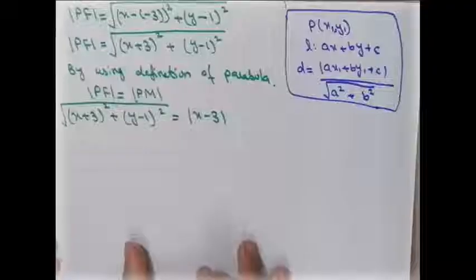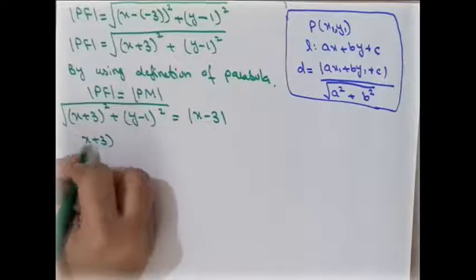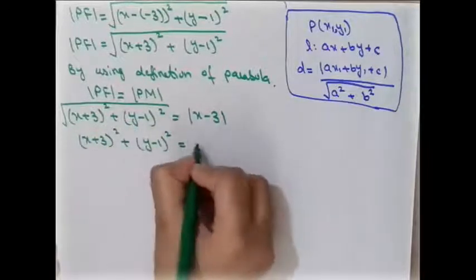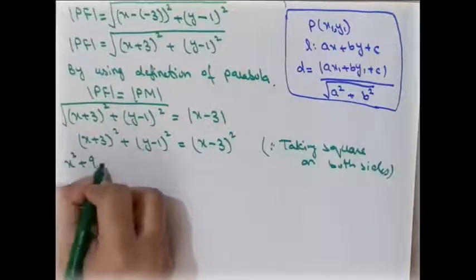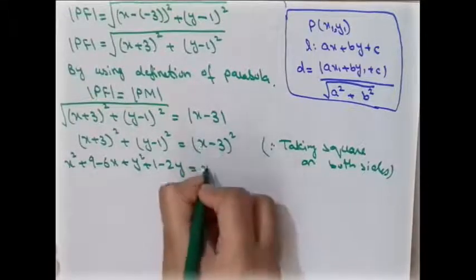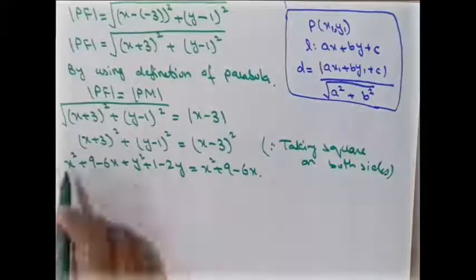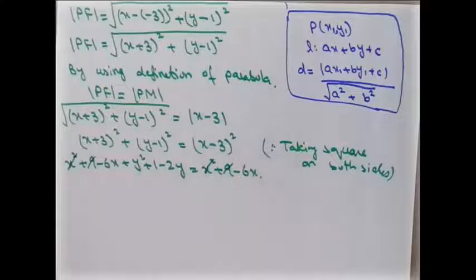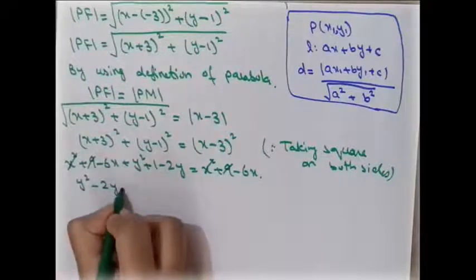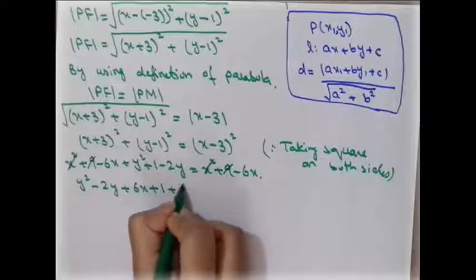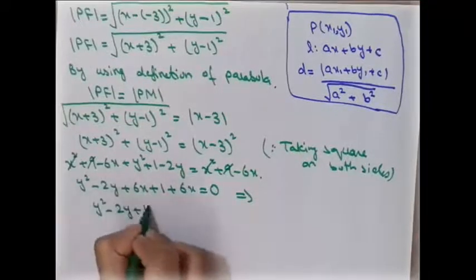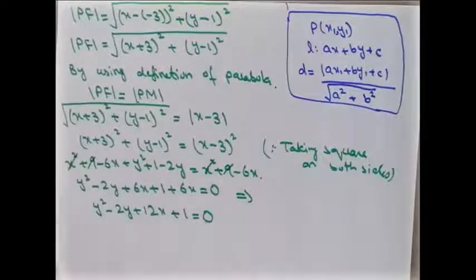Squaring both sides: (x + 3)² + (y − 1)² = (x − 3)². Expanding: x² + 6x + 9 + y² − 2y + 1 = x² + 9 − 6x. The x² and constant terms cancel, leaving: y² − 2y + 6x + 1 + 6x = 0, which simplifies to y² − 2y + 12x + 1 = 0. This is the final equation of the parabola.